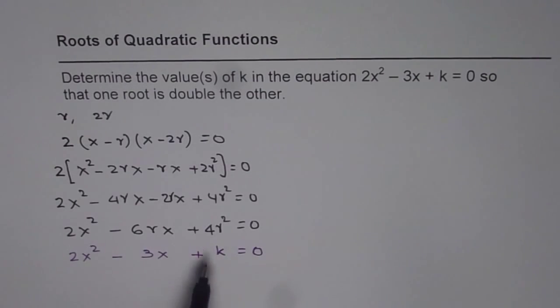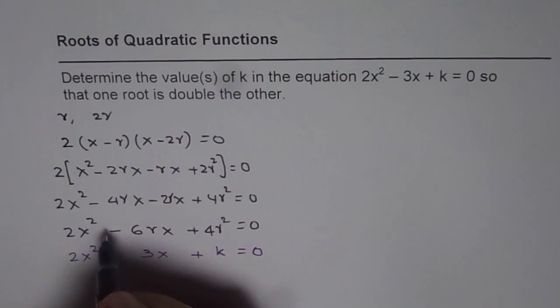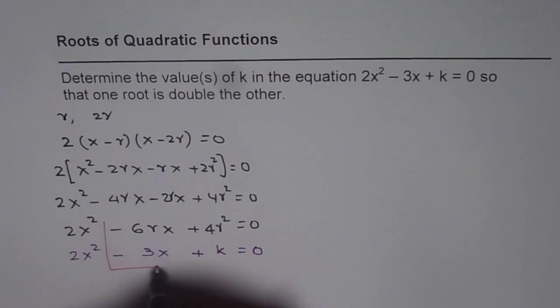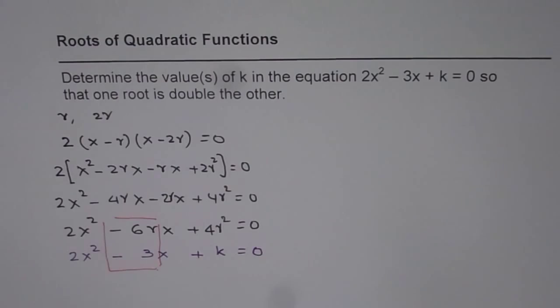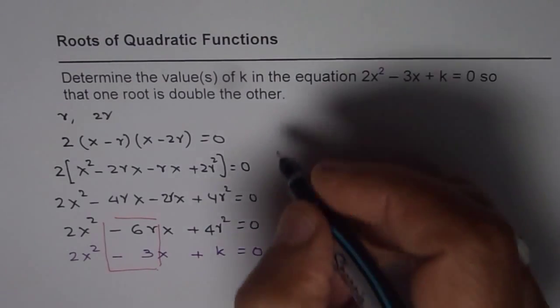Now, k is related with r. We can find the value of r by comparing the coefficients of x, right? So, we will compare these coefficients. Coefficients of x are minus 6r and 3. So, let us compare the coefficients and find the solution.